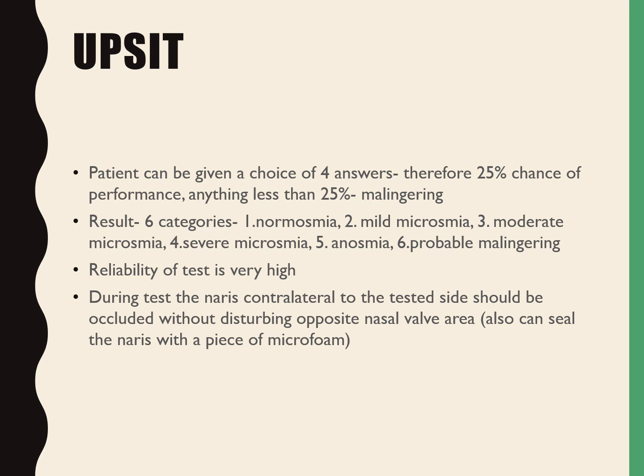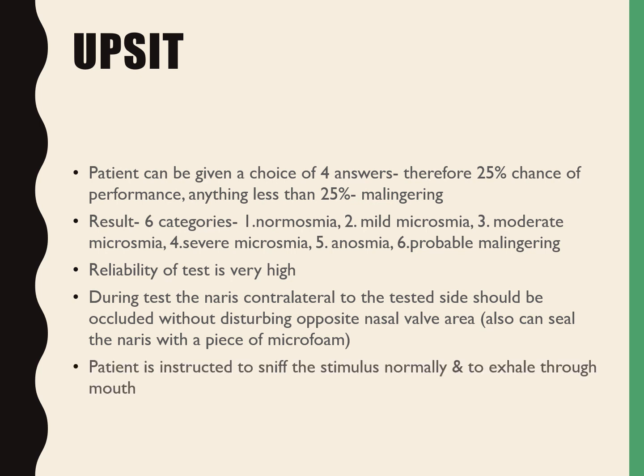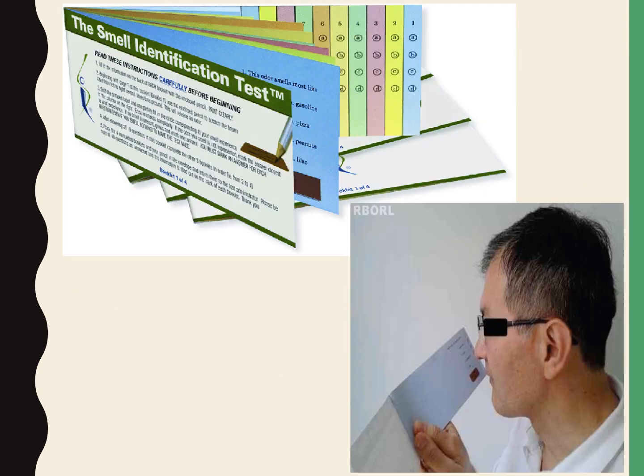During the test, the contralateral nostril should be occluded without disturbing the opposite nasal valve area. We can also seal the nostril with a piece of tape. The patient is instructed to sniff the stimulus normally and to exhale through the mouth. The booklets used in the smell identification test require the patient to scratch the area where the odorant is present, sniff it, and identify the smell.